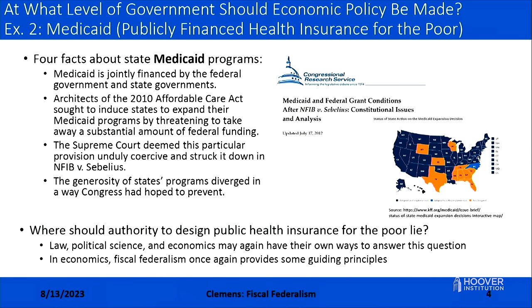As a result, the generosity of states' programs diverged in a pretty significant way in coming years, in a manner not intended by Congress. Again, this raises the question: where should authority to design public health insurance for the poor lie? Fiscal federalism is the toolkit economists apply for thinking about good policymaking in this important economic space.